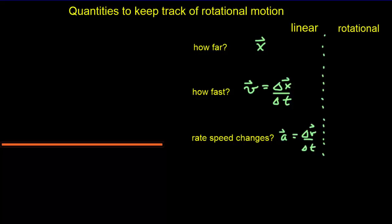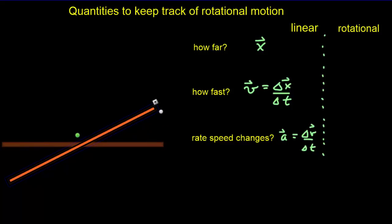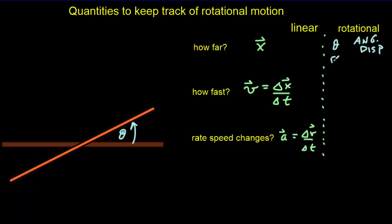Similarly, we're going to need three quantities to keep track of rotational motion. Suppose this rod rotates. The first thing we want to keep track of is how far it rotates. We can do that using the angle theta, which is called the angular displacement. We could use degrees to measure theta, but it's more natural and easier if we use radians.